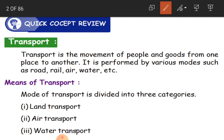Transport is the movement of people and goods from one place to another. It is performed by various modes such as road, rail, air, water, etc. For example, you want to come to school from home every day — somebody may come with their parents on two-wheelers or four-wheelers, somebody by bicycle, somebody by walk. There are different types of transportation, like bus, train, plane, car, and so on.